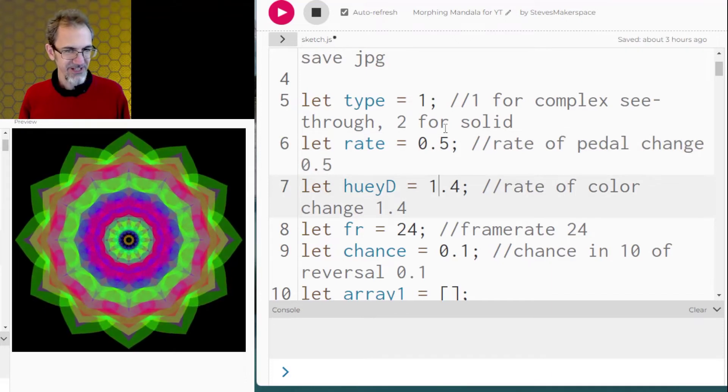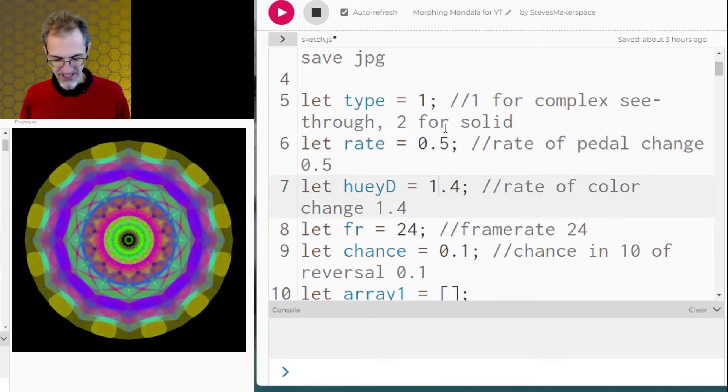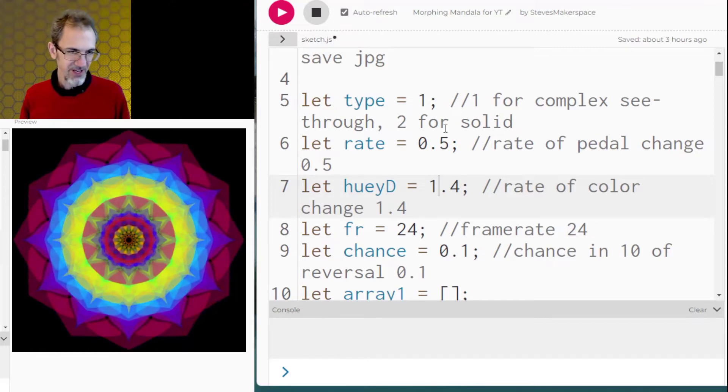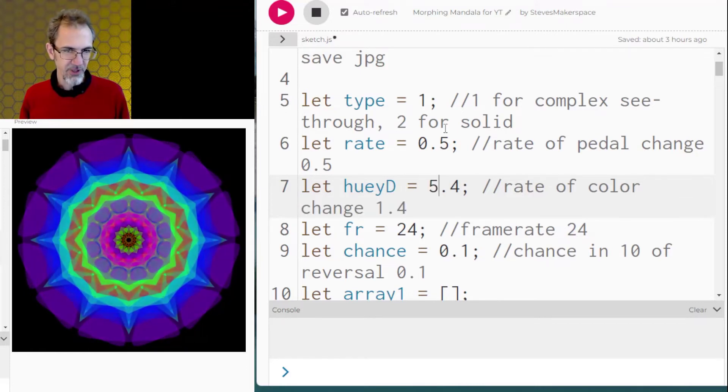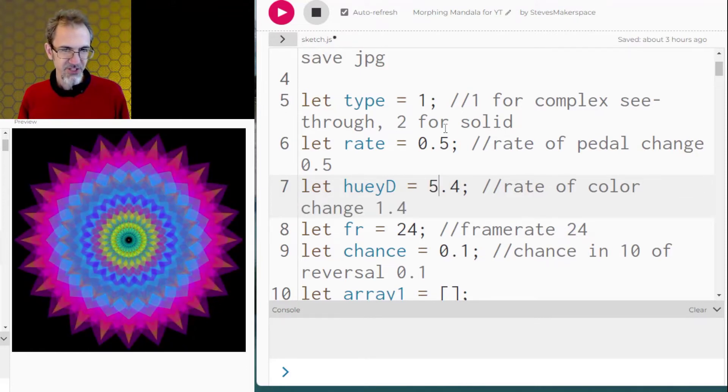We can also change the rate of the color change. So if I do 5.4 instead of 1.4 you'll see the color is changing a lot faster.